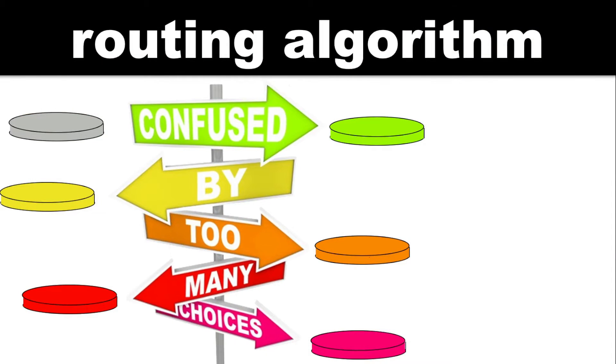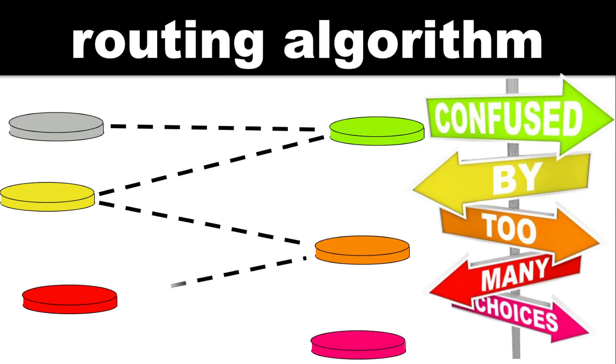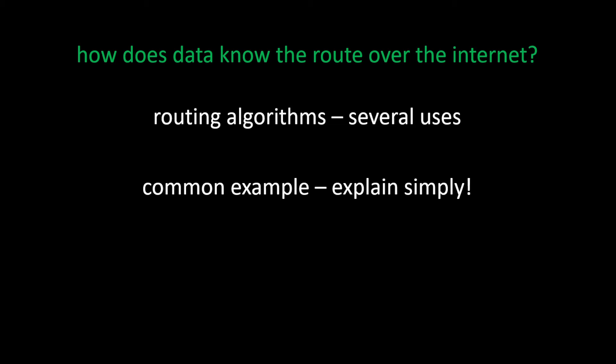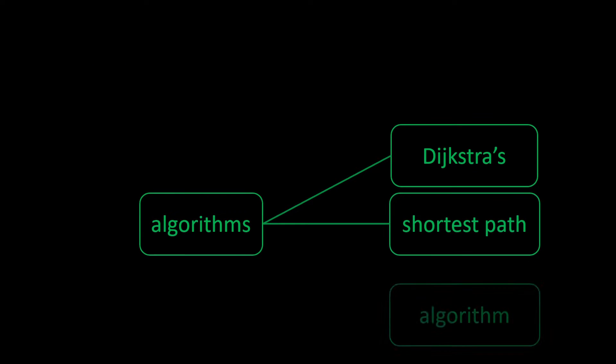When you send data over the internet, how does it know how to get there? It uses a routing algorithm. These algorithms might have different uses, but we want to explain a common example. In this video we're going to compare Dijkstra's algorithm with the uniform cost search that we've seen before, to show why it's better.